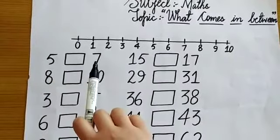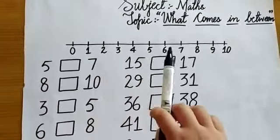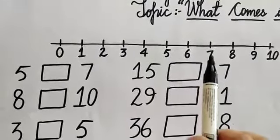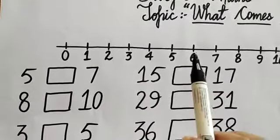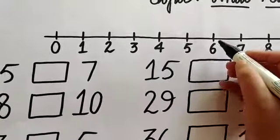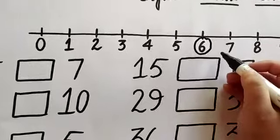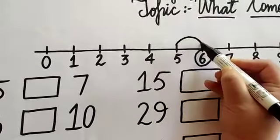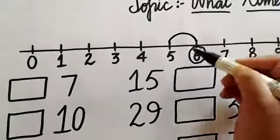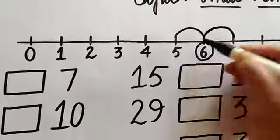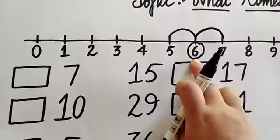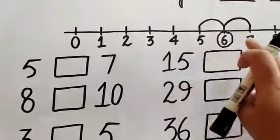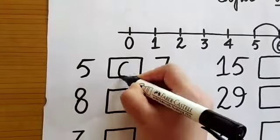Which number is this? This is number 7. Now see on the number line, which number will come between 5 and 7? Number 6. Number 6 is in the middle of 5 and 7. You will also remember that 6 comes after 5, and 6 is also before 7. So number 6 will come in between 5 and 7. I will write number 6 here.